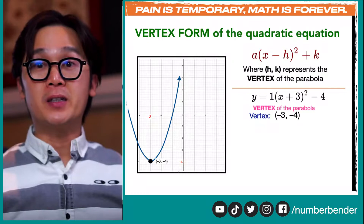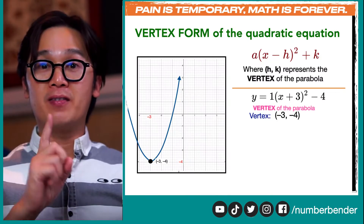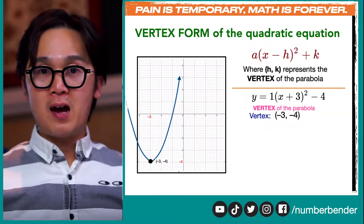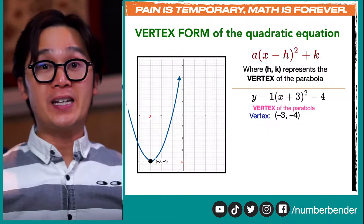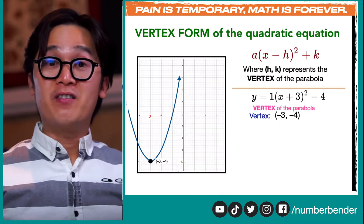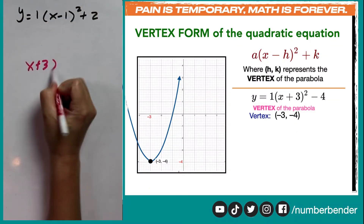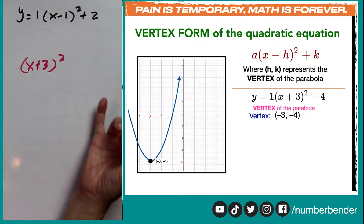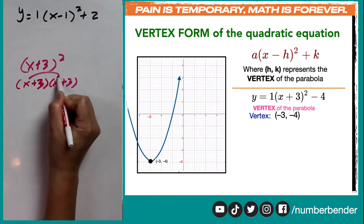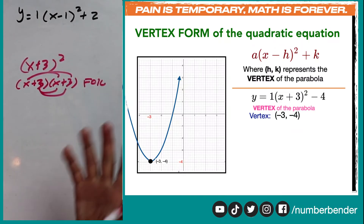If we graph this particular equation, our parabola on its vertex form is shown on screen right now. To convert the vertex form of the parabola into its standard form — which is y equals ax squared plus bx plus c — all we need to do is expand our square of binomial, which is x plus 3. We can FOIL it out as x plus 3 times x plus 3, multiplying each term using the FOIL method.